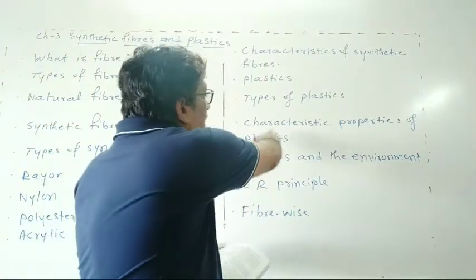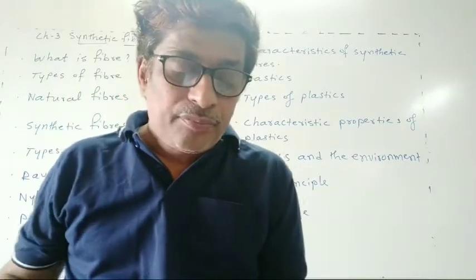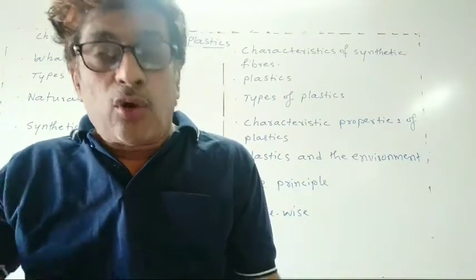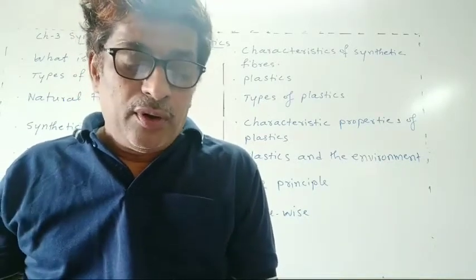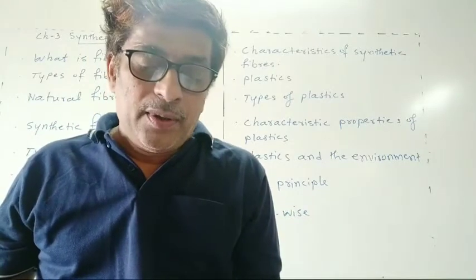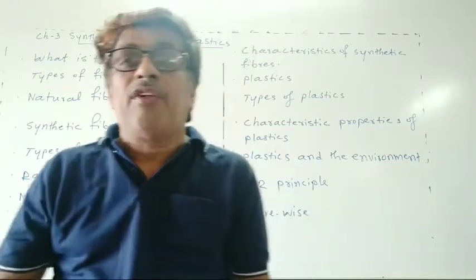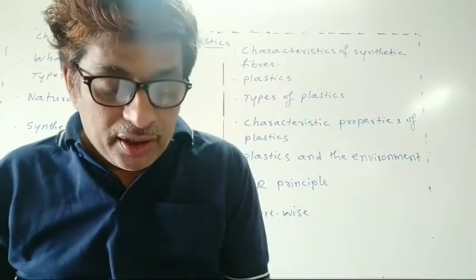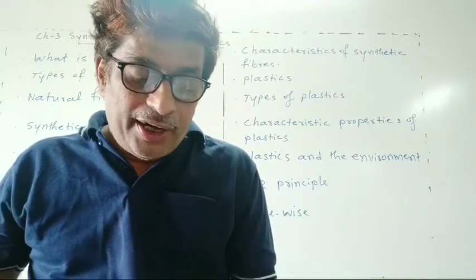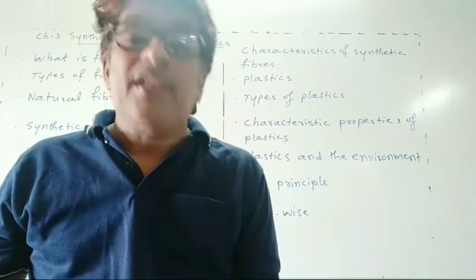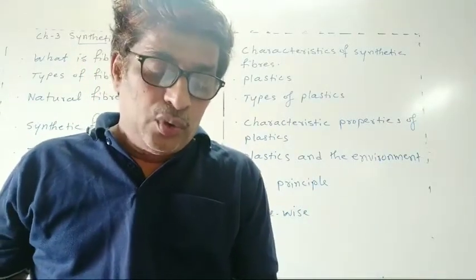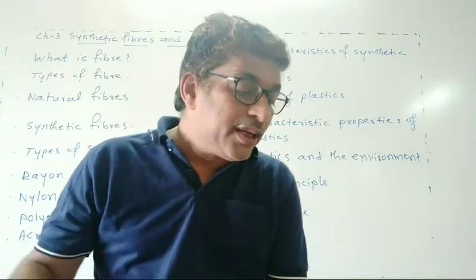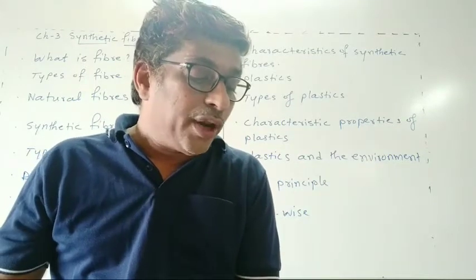Now we will see the characteristics and properties of plastics. Plastics are non-reactive — they do not react with water and air and are not corroded. That is why they are used to store various kinds of materials, including many chemicals. Plastics are light in weight, strong, and durable. Since plastic is light, strong, and durable and can be molded into different shapes and sizes, it is used for various purposes. Plastics are generally cheaper than metals, so they are widely used in industry as well as for household articles. Plastics are poor conductors of heat and electricity — that is why electrical wires have plastic coverings and handles of screwdrivers are also made from plastics.